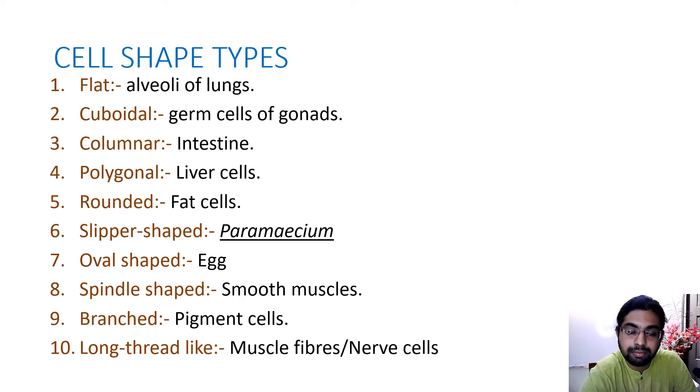Germ cells of gonads are cuboidal in nature. Intestine: we find columnar cells. Liver cells are polygonal. Fat cells are rounded in nature. Paramecium: slipper-shaped. Nerve cells are long thread-like.